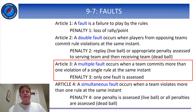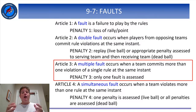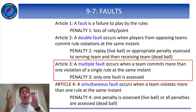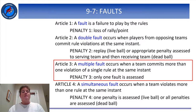If a team commits more than one violation of the same rule at the same moment, then a multiple fault has occurred. An example might be if two blockers on Team A both contact the net while trying to block. There are no two-point plays in volleyball, so just penalize one of these faults.